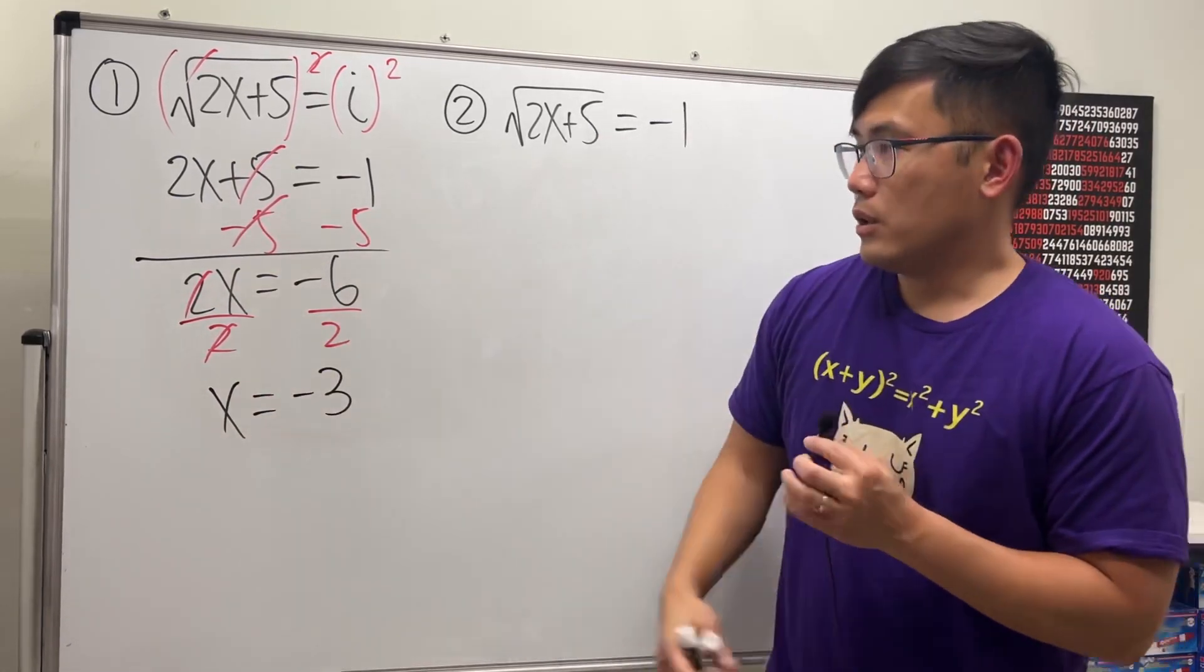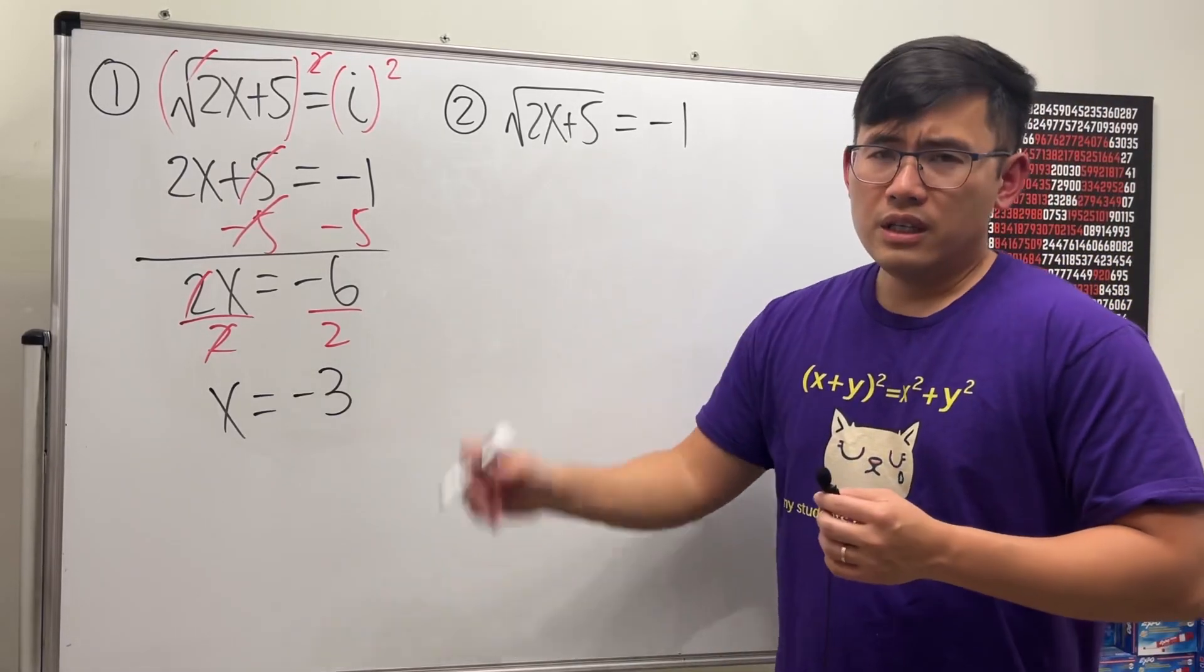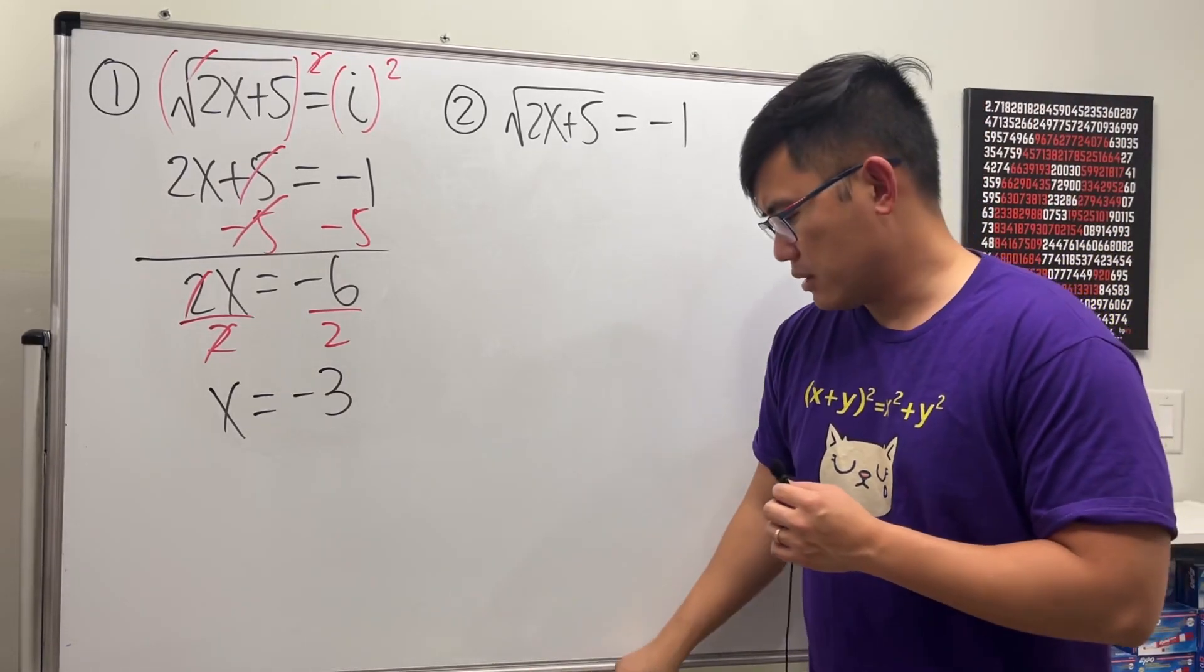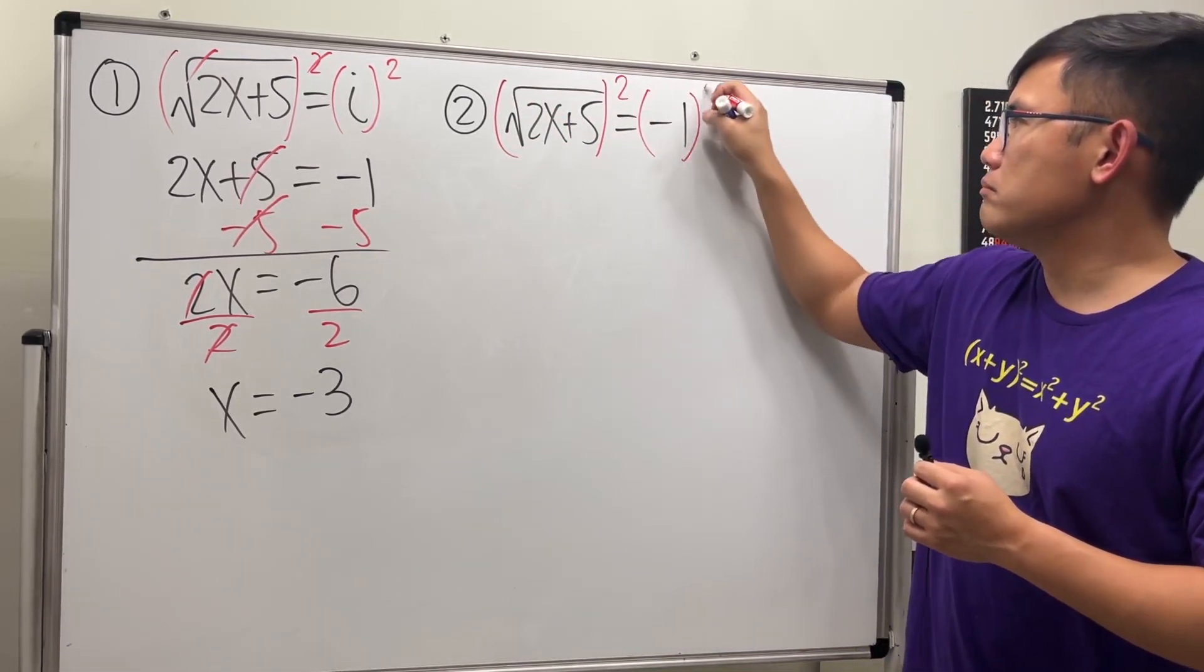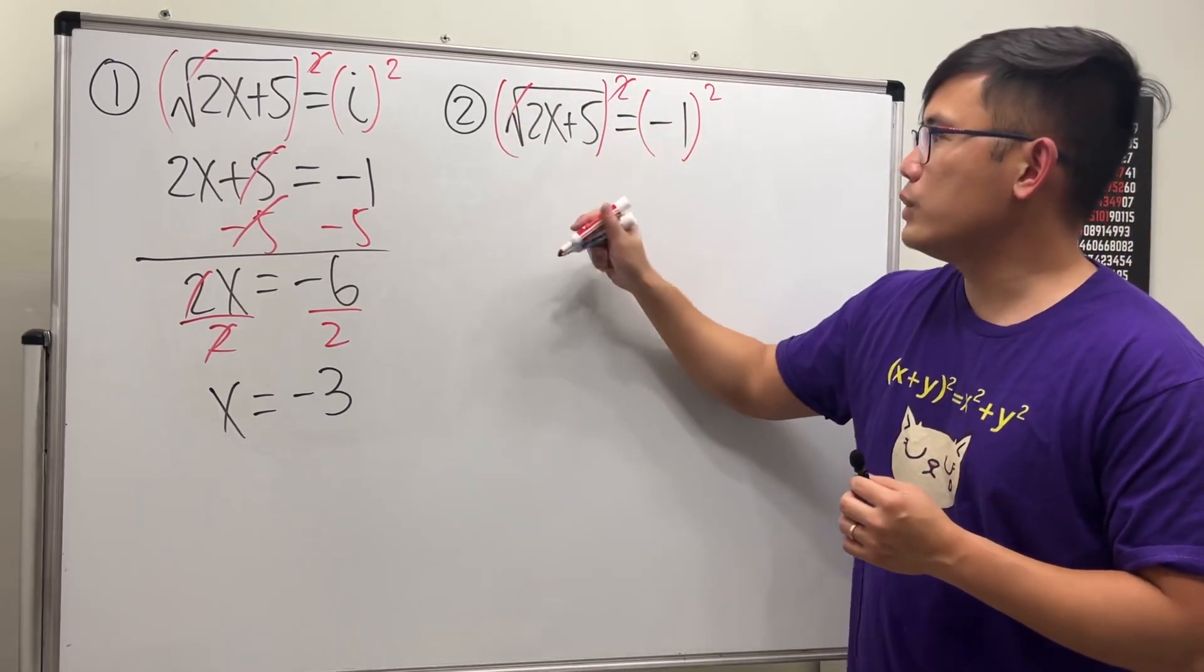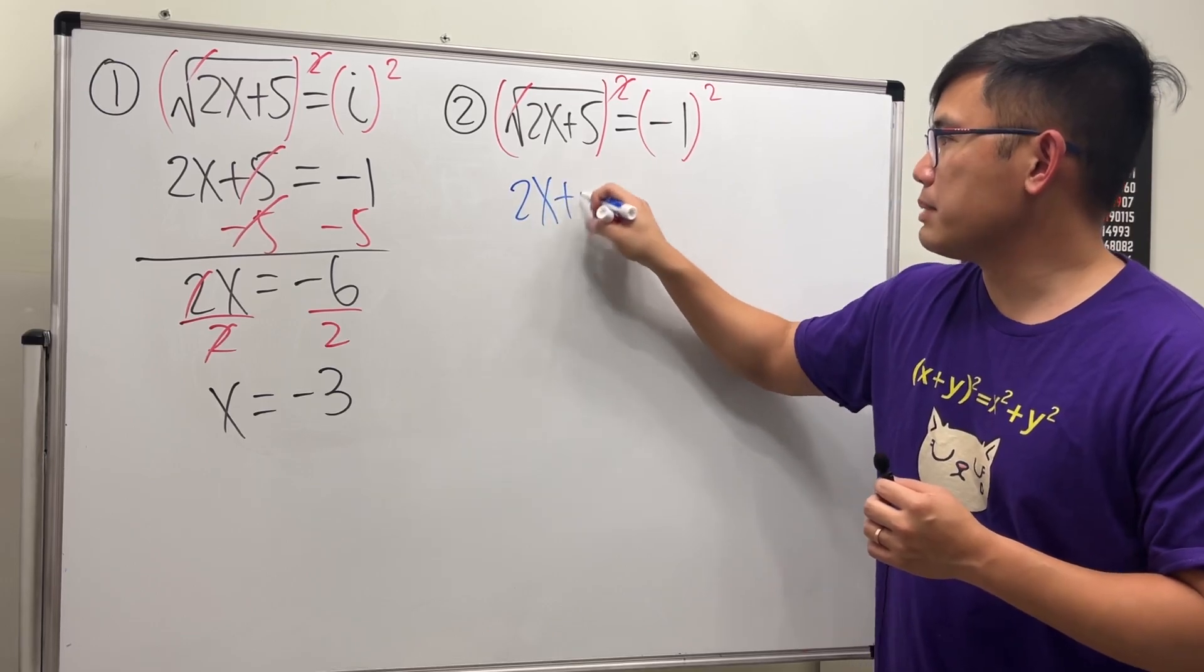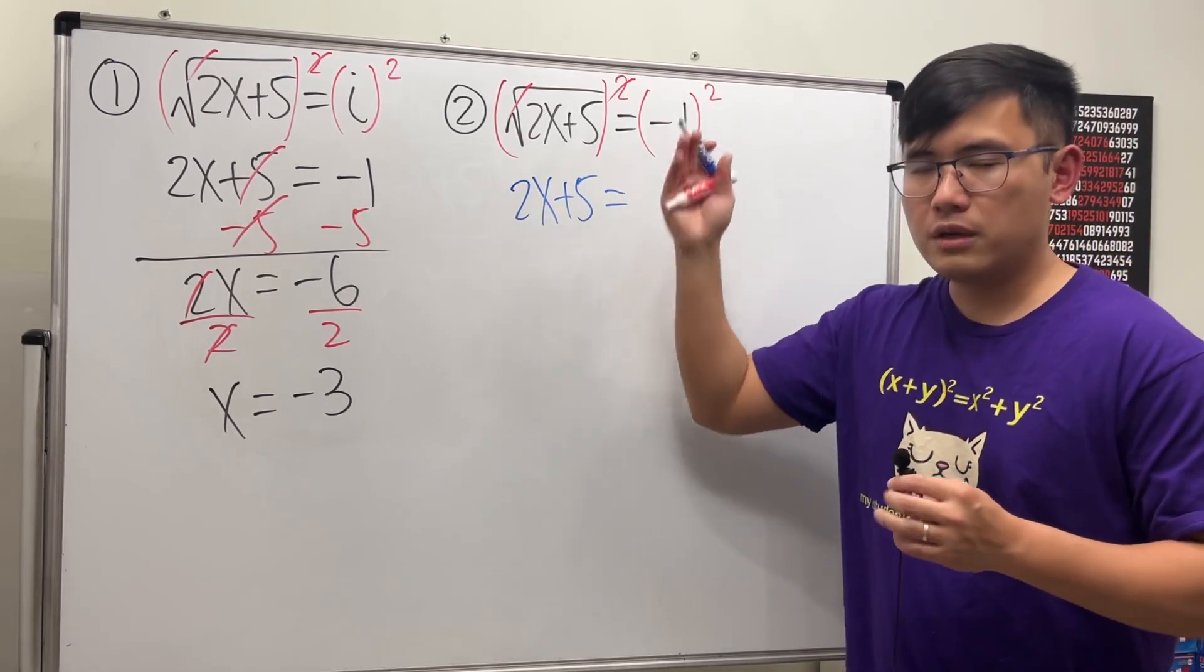Okay, pretty good. For the second one, it looks like we can just do the same thing. Let's try. Can we still square both sides? It looks like it, because the square root cancels and we still get the inside: 2x plus 5.